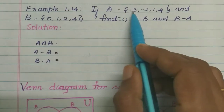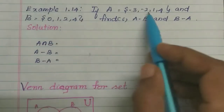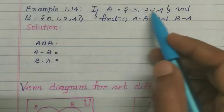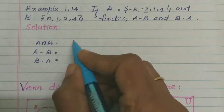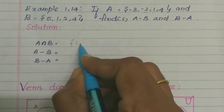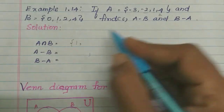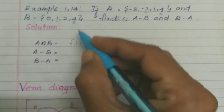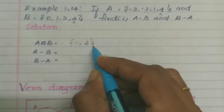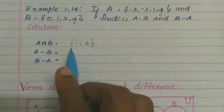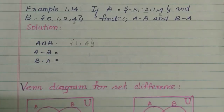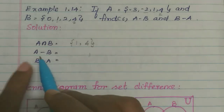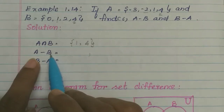If we compare the elements of A and B: minus 3, minus 2, then 1 — here 1 is also in B, so 1 and 4 are common in both sets. So A intersection B is the set {1, 4}.